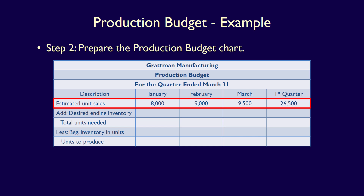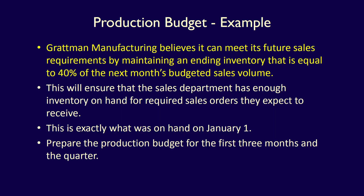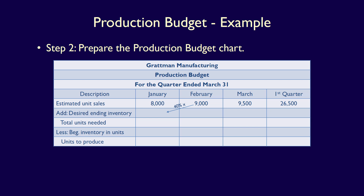We now need the desired ending inventory, which is determined by management based on the most appropriate safety stock to have on hand at the end of every month. Grattman Manufacturing maintains an ending inventory equal to 40% of the next month's budgeted sales volume. In January, the desired ending inventory equals 40% of February's expected sales: 9,000 units multiplied by 40% equals 3,600 units. That's what management wants on hand at the end of January — January's desired ending inventory.